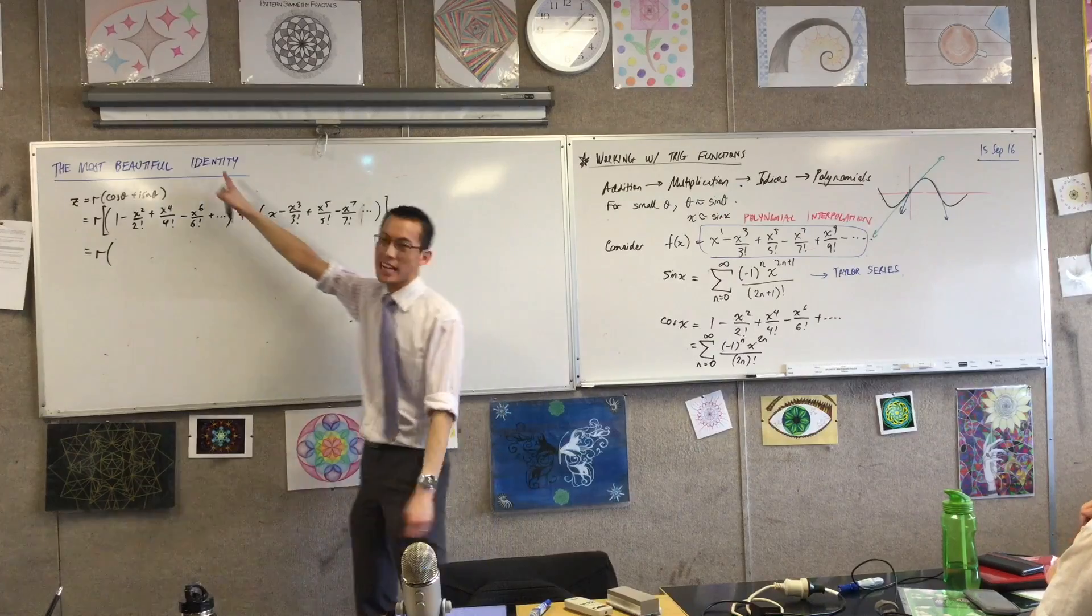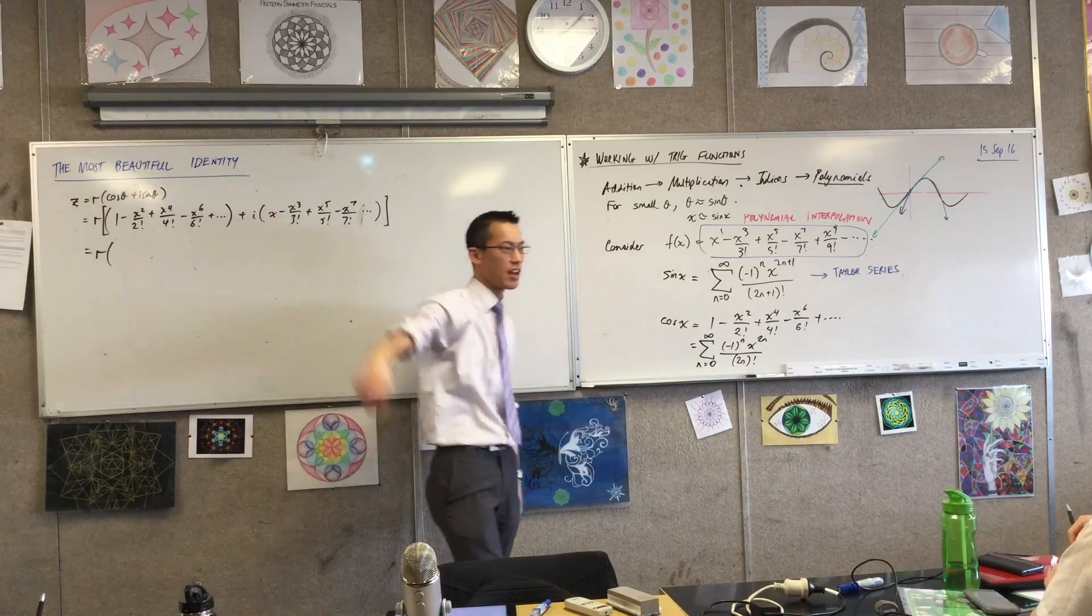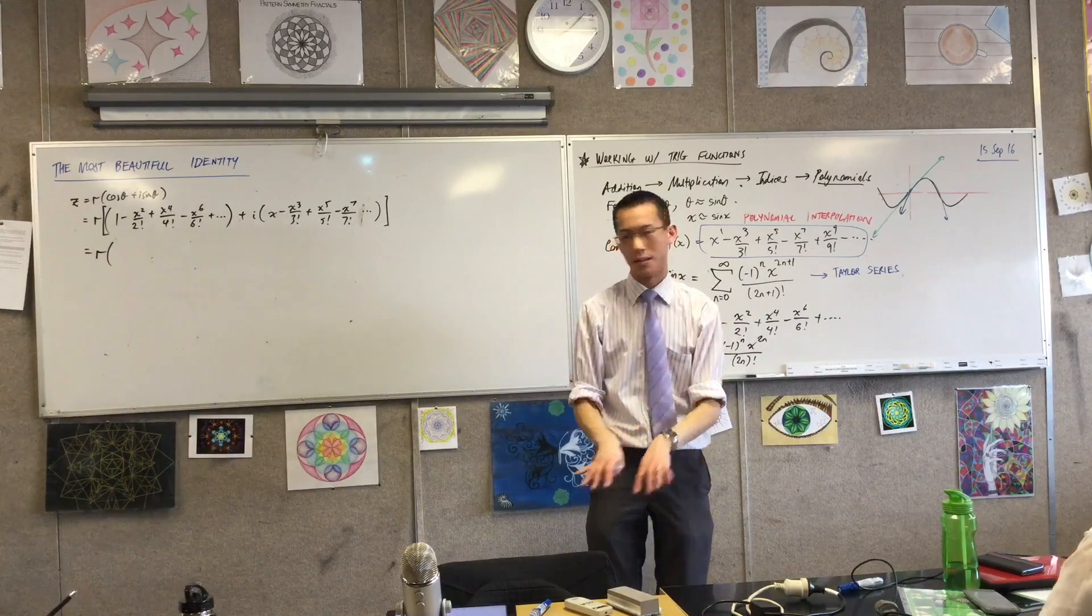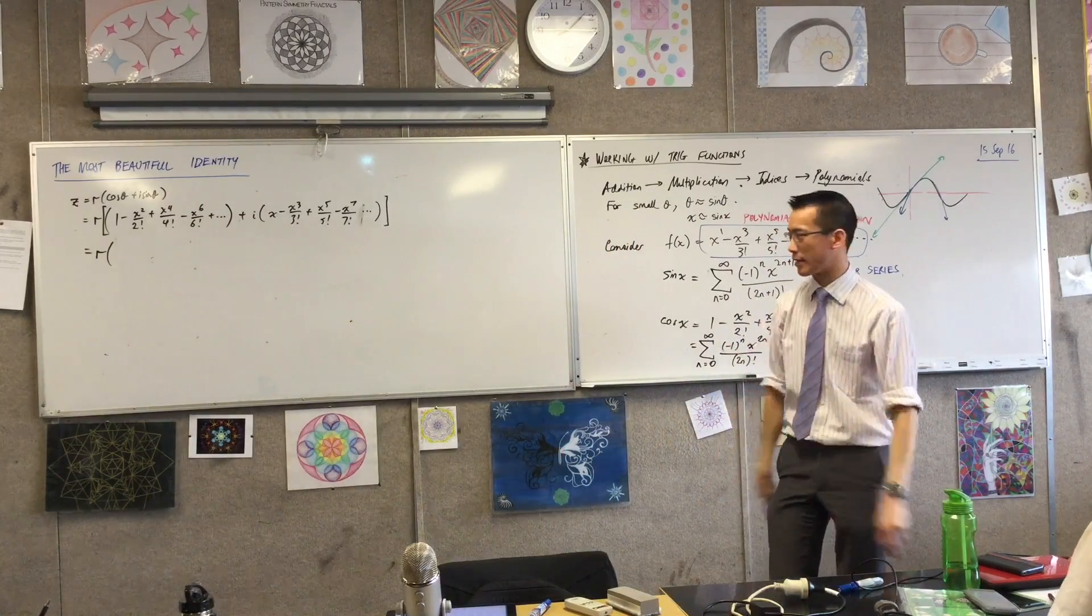We're used to this, right? When we do trig identities, like regular trig identities, sometimes you've got to add something and subtract it or multiply it and divide it to make things make sense. And it's going to happen a little more before we get there.